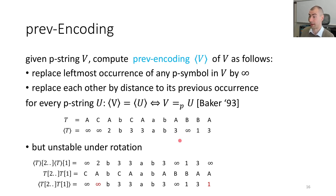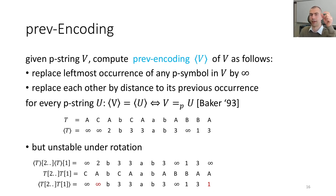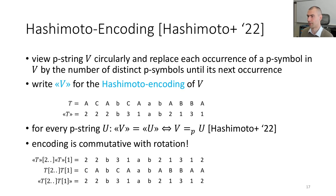Unfortunately, PREF encoding is unstable under rotation — it doesn't commute with the rotation operation. If you rotate in the PREF encoded string by one, you get one result, but if you rotate the text first and then compute PREF encoding, the second A becomes the first A and gives infinity instead of two. So this doesn't work because you need this commutativity property for defining the L and F arrays for the BWT. This property is given by the Hashimoto encoding, where for a p-symbol you look to the right until the next same p-symbol appears.